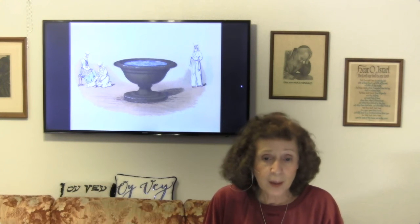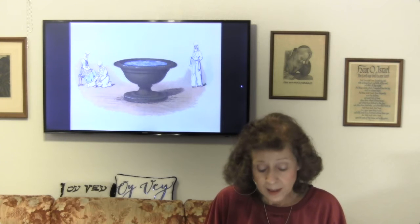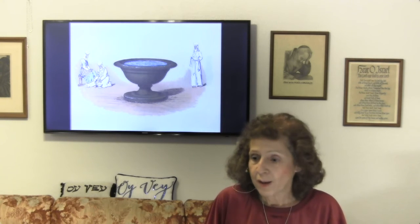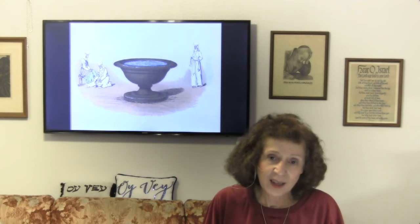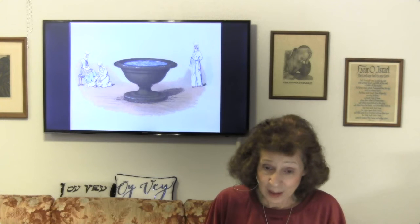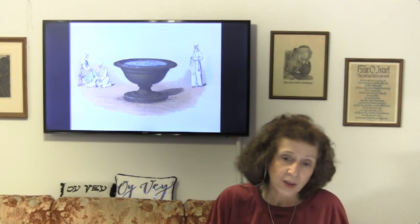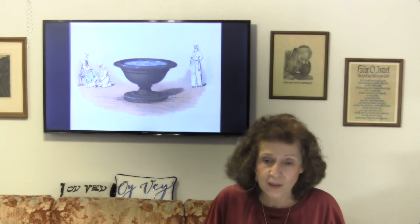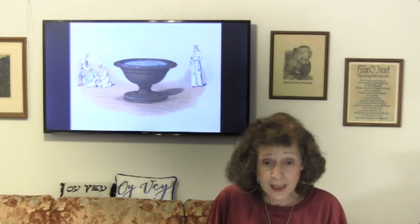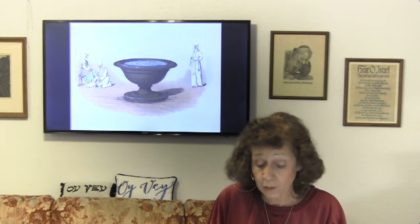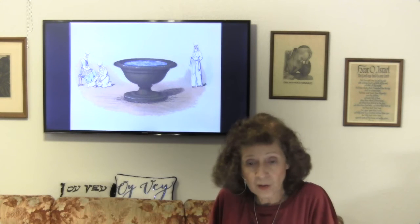We've come to the laver. The laver was a place of washing — water in a bronze vessel, a big bowl. There are many artistic renditions of what the laver looked like; we don't know exactly. The laver was for cleansing according to need, and there was no measurement given because we need daily cleansing. Cleansing is sanctification — sanctified means being set apart from sin but also being set unto God, set apart for a purpose to serve God.